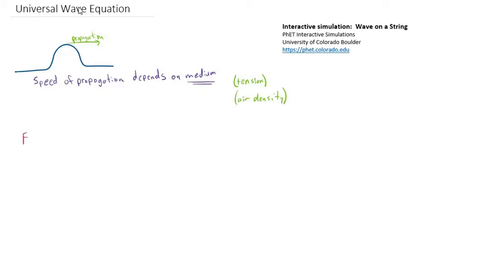The next thing I want to talk about is the frequency. Now we know from our oscillations chapter that frequency is a measure of how many cycles per second. So this is really just the oscillation of the source. It's a matter of how many times the source oscillates per second. So let's see what that looks like.